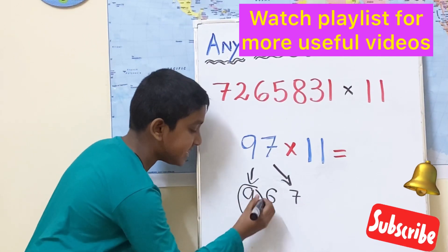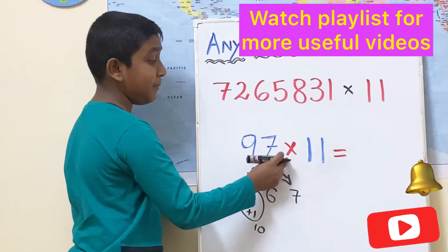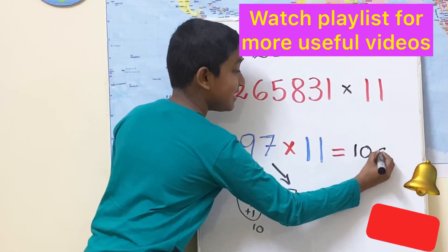So we get the answer as 10. So 97 multiplied by 11 is equal to 1067.